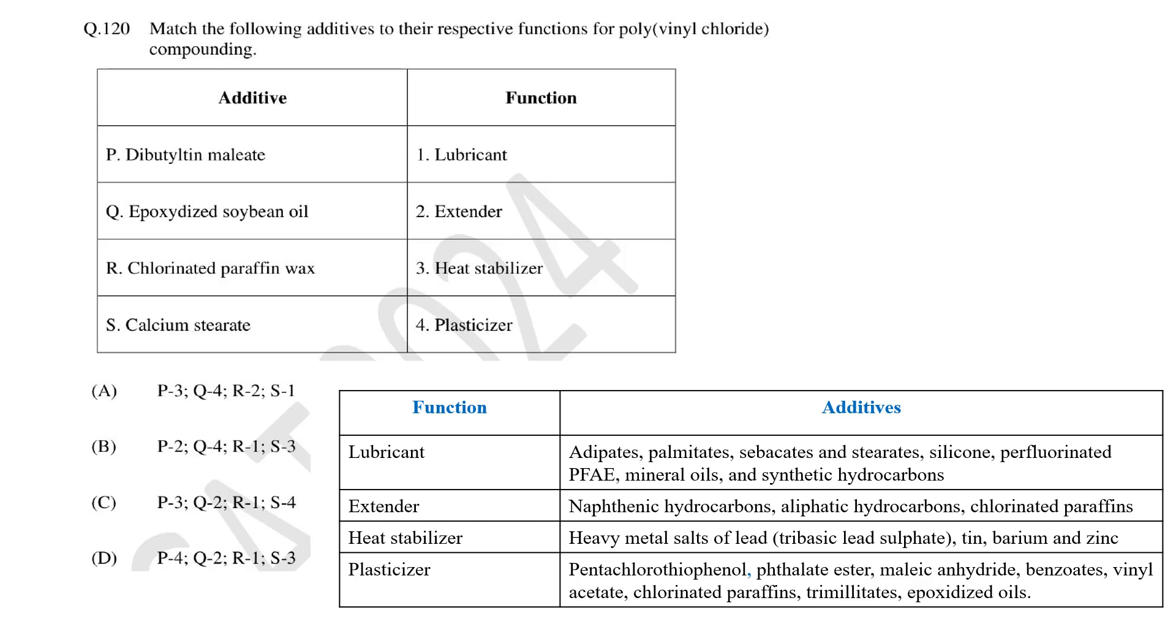Other than these organotin compounds are also used as heat stabilizers. Plasticizers are small molecules added to PVC to improve flexibility and to reduce brittleness. Phthalates, carbonates, phosphates, anhydrides, fatty acid esters are used as plasticizers. So based on this information the correct answer is A.